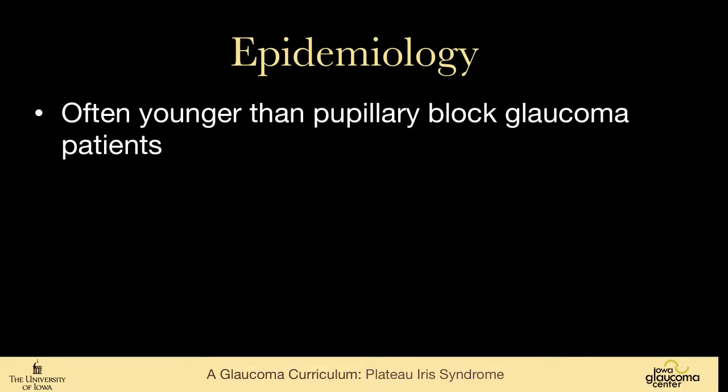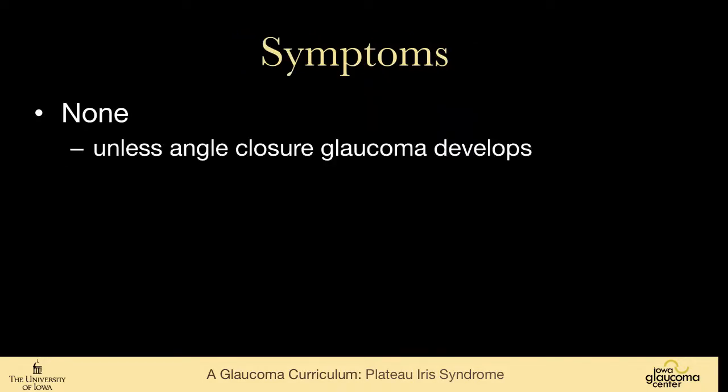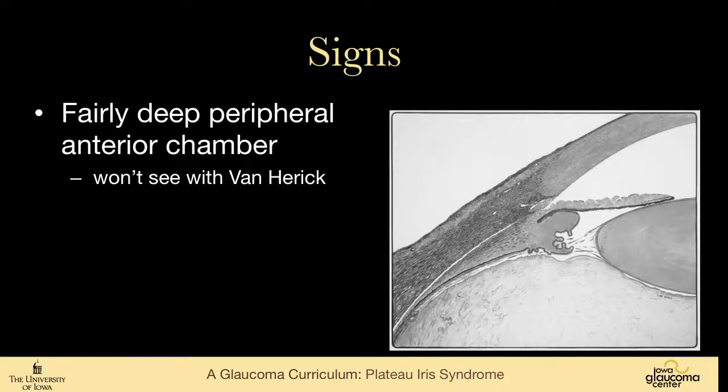This often occurs in people younger than the usual pupillary block glaucoma patients. They are generally asymptomatic unless they develop an acute attack of angle closure. When we examine them, they have a fairly deep peripheral anterior chamber that one won't see evidence of closure with the Van Herrick.